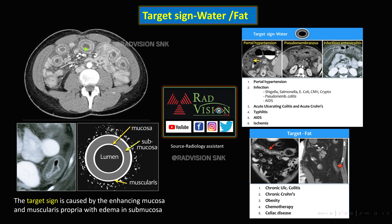Next: target sign with water or fat in the bowel wall. The enhancing mucosa is the central layer, and the enhancing muscularis propria is the peripheral layer; in between, the submucosa is edematous. Whenever the submucosa is edematous, you will get this target sign of water, which may be seen in portal hypertension, infections, ulcerative colitis, Crohn's disease, typhlitis, AIDS, ischemic bowel, or shock bowel.